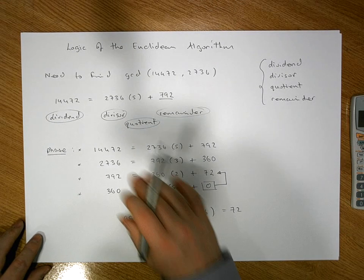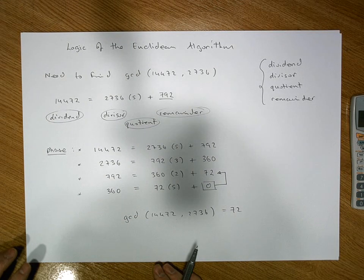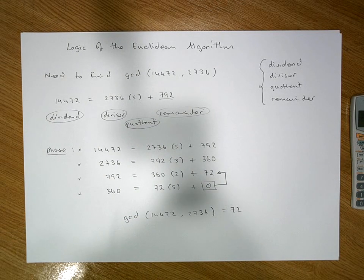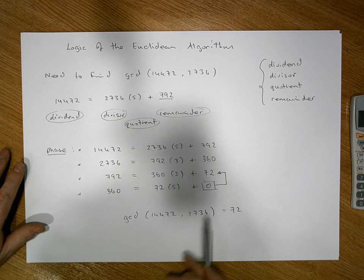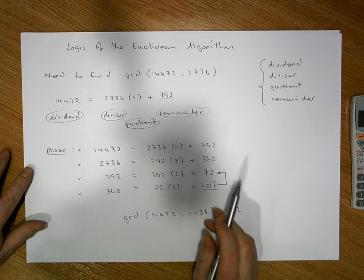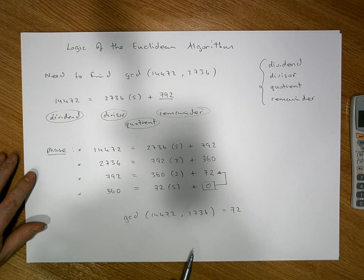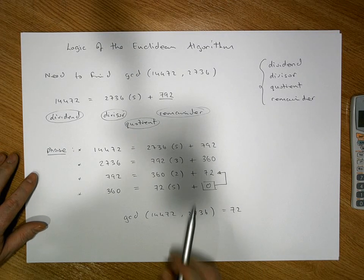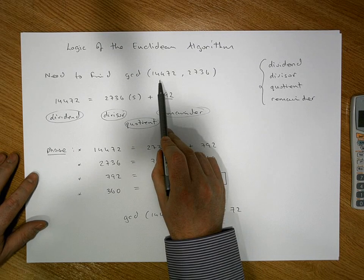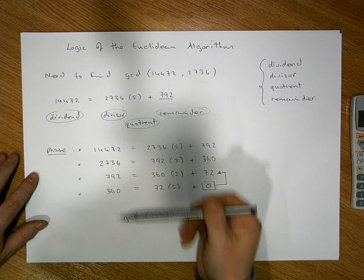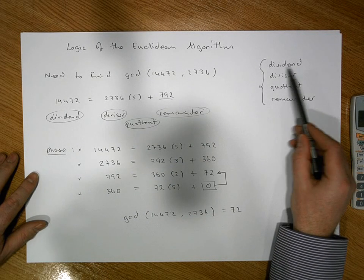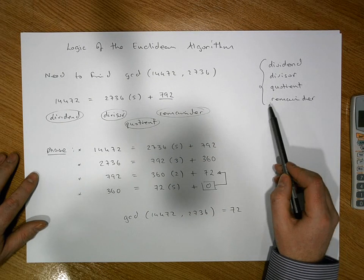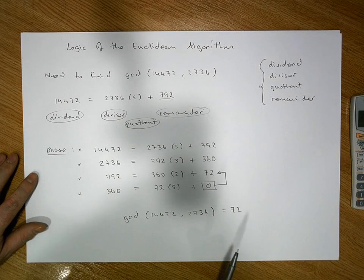So the key question is: why does this process work? Why, after multiple applications of the division algorithm, is the last non-zero remainder the greatest common divisor between our two original numbers? That was just a quick example. To logically understand what's going on, let's generalize the two numbers to be A and B, keeping track of dividends, divisors, quotients, and remainders. Let's see what happens with 72.